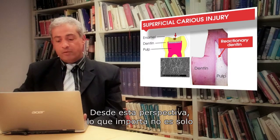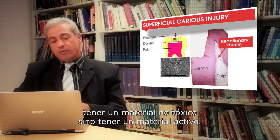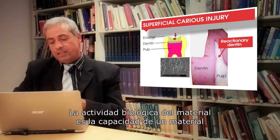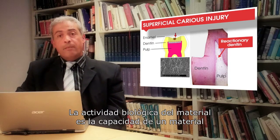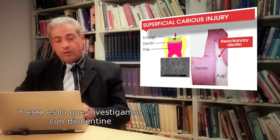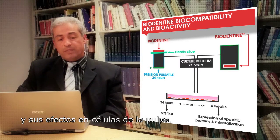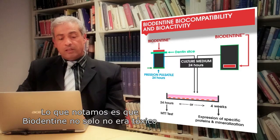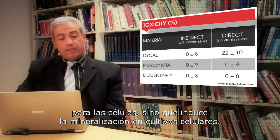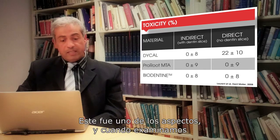The second aspect, which appears essential and complementary, is to look at the pulp site. From the pulp side, it is important not only to have a non-toxic material, but to have a bioactive material. Bioactivity is the capacity of a material to induce specific functions in the target tissues. We investigated this with Biodentine and its effects on pulp cells. We noticed that not only was Biodentine non-toxic to these cells, but it also induces mineralization in cell cultures.